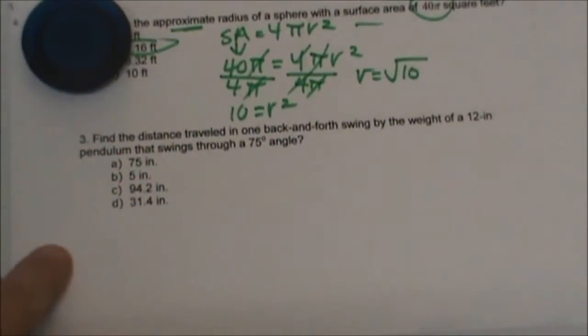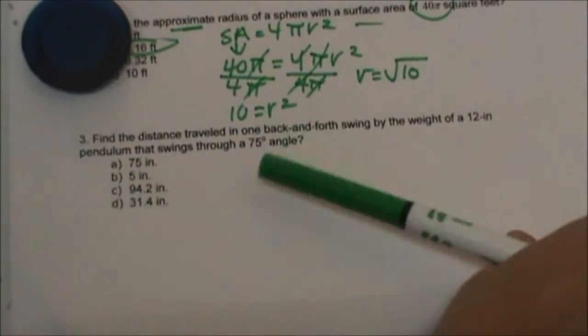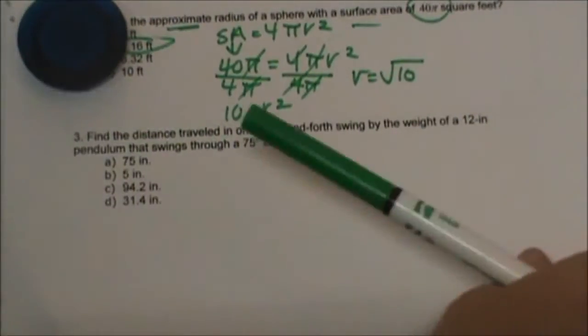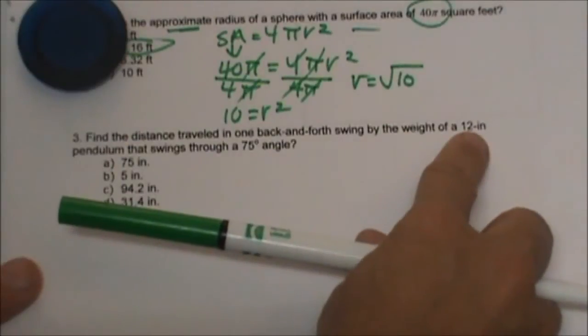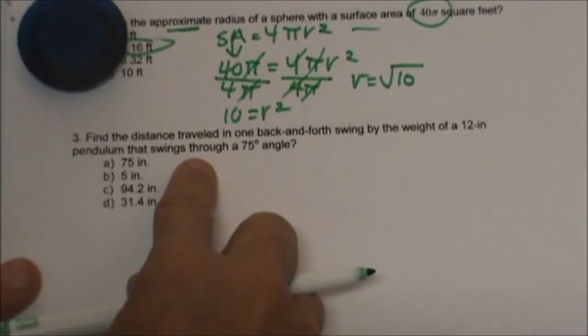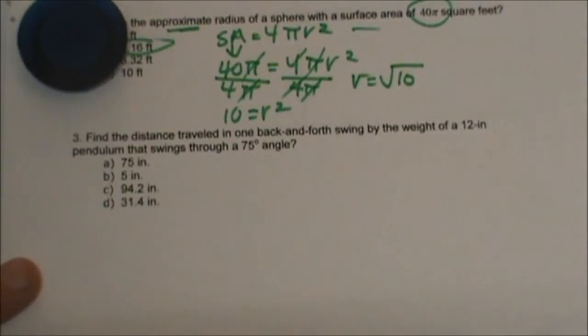Number 3, we have find the distance traveled in one back and forth swing of a weight of a 12 inch pendulum that swings through a 75 degree angle.